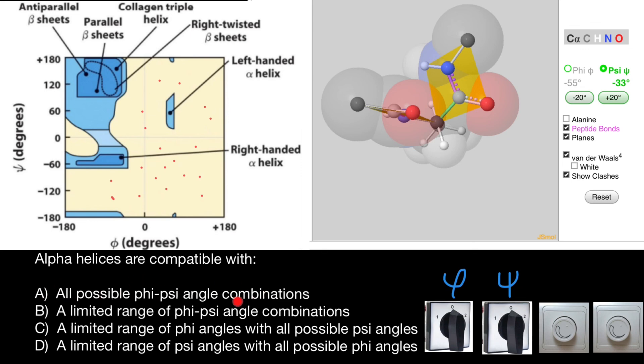Variant A, all possible phi-psi angle combinations. This is not true. Variant B, a limited range of phi-psi angle combinations. This is going to be our choice. Variant B is the correct answer.